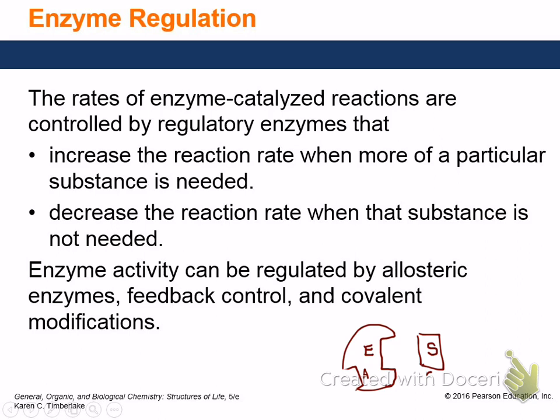We can have feedback control in an enzyme that's both positive and negative. Generally, negative feedback: if I give you negative feedback, whatever you're doing, you adjust it to try to reduce it. Negative feedback is often used when a product is produced — you get enough of the product, and that product comes back and inhibits the enzyme so not as much of that material gets made anymore. It suppresses production.